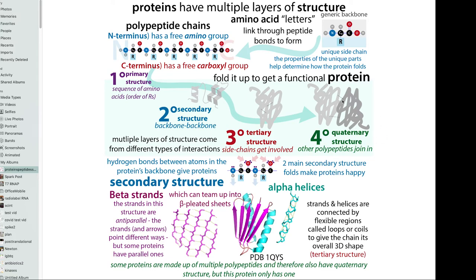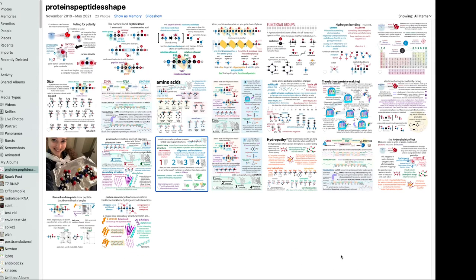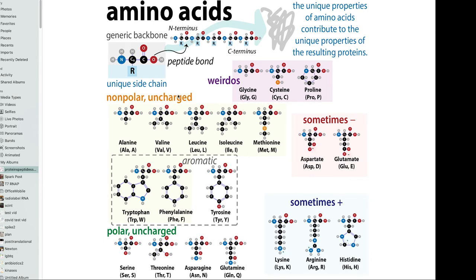Some proteins are a single polypeptide chain folded up and just have tertiary structure. Then some proteins have quaternary structure where you have multiple chains hanging out together - a multimer. A monomer is a single chain with no quaternary structure. An oligomer or multimer has multiple chains - a dimer is two, a trimer is three, a tetramer is four. You can also classify them by whether the chains are the same or different: a homodimer has the same chain twice, a homotrimer is three of the same, and hetero means they're different. So there are different levels of protein structure, but ultimately all of that structure comes down in large part to those amino acids.